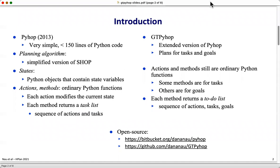GT PyHop is an extended version of PyHop that plans for both tasks and goals. Actions and methods are still ordinary Python functions. Some methods are for tasks, others are for goals. Each method returns a to-do list which is a sequence of actions, tasks, and goals. Both planners are available as open source software at the URLs given at the bottom of the page.